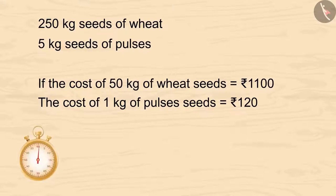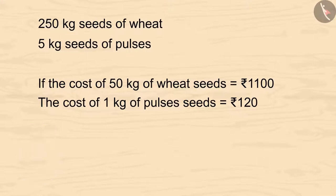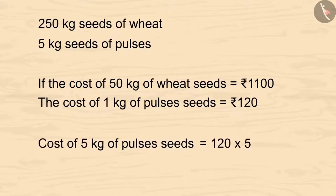Kids, you can pause the video and calculate it. The cost of 1 kg of pulses seeds is 120 rupees. So, the cost of 5 kgs would be 120 multiplied by 5, which is 600. Garim spent 600 rupees on pulses seeds.